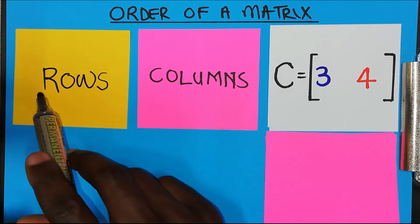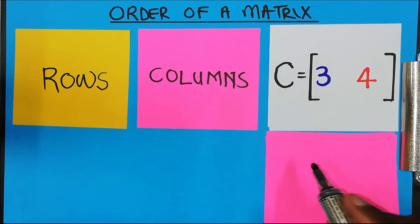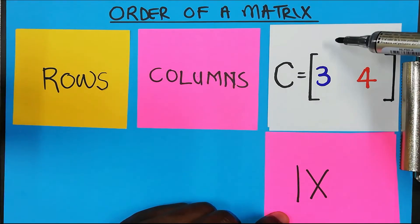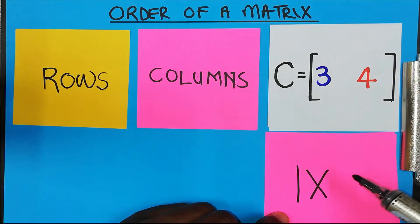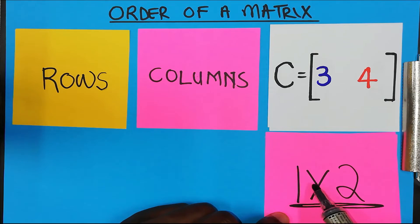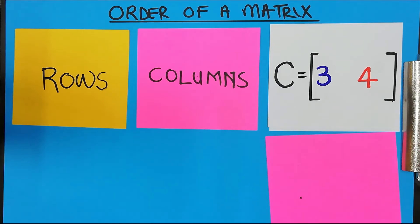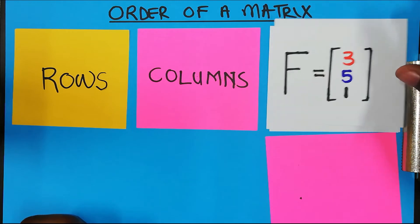Let's take another one — this is matrix C. Matrix C has only one row, so you write one. And how many columns does it have? One and two columns, so you write two. We call it a one by two matrix.